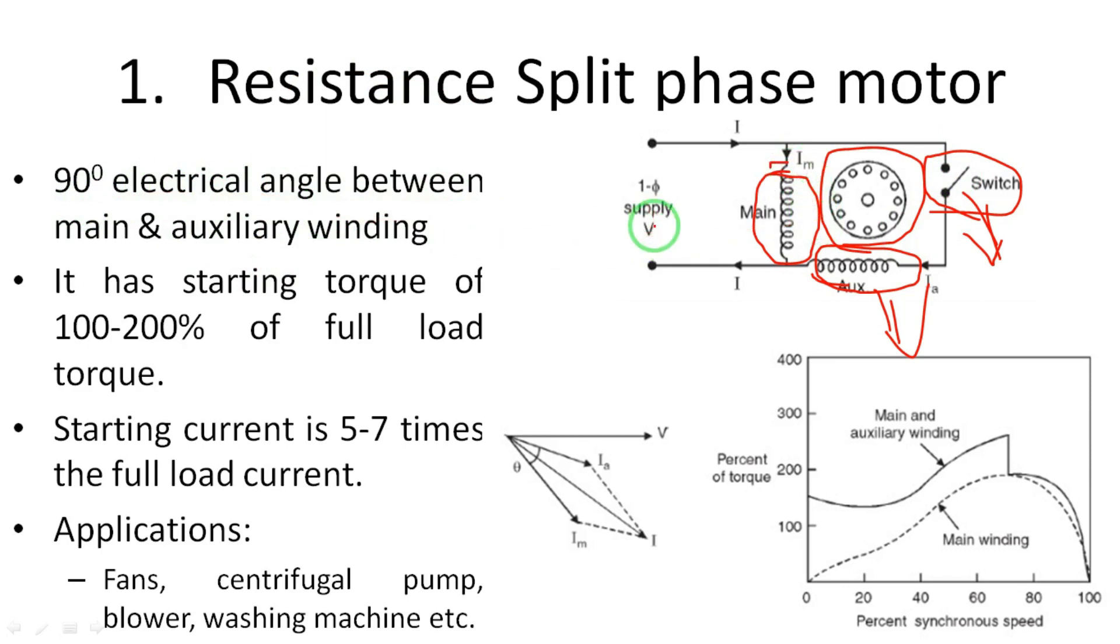There is a single supply given to the machine. The main current flows to the main winding and the main flux will be developed. At the same time, when the switch is in closed position, current flows through the auxiliary winding producing auxiliary flux. These two fluxes will maintain 90 degrees electrically, then due to the phase difference the rotor will automatically rotate.